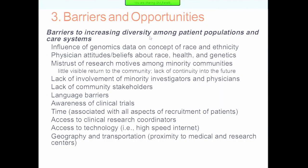Access to technology — things like Fitbits and sensors — is going to become an even bigger barrier. High-speed Internet is also a concern. In Maine, for example, there may not be much racial or ethnic diversity, but socioeconomic diversity and rural geographic distribution of patient populations are key issues, particularly where there isn't much high-speed Internet — in places where moose outnumber routers. Geography and transportation, specifically proximity to medical and research centers, represent another big barrier to increasing diversity among patient populations and care systems.